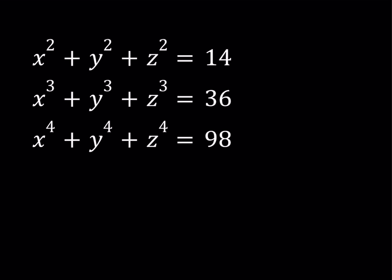Hello everyone. In this video we're going to be solving an awesome polynomial system. This problem is kind of similar to a long list IMO problem from Germany — maybe we'll do that problem some other time. We have the equations: x squared plus y squared plus z squared equals 14, x cubed plus y cubed plus z cubed equals 36, and x to the fourth plus y to the fourth plus z to the fourth equals 98. We're looking for all solutions, real and complex.